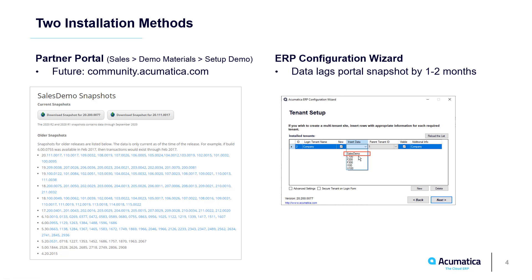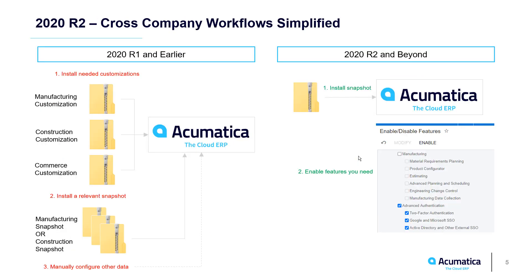For example, in 2020 R2 you'll find that the manufacturing data hasn't been loaded into the wizard yet. One of the benefits of the past release is that everything — including manufacturing, construction, and commerce — is now part of the core system.